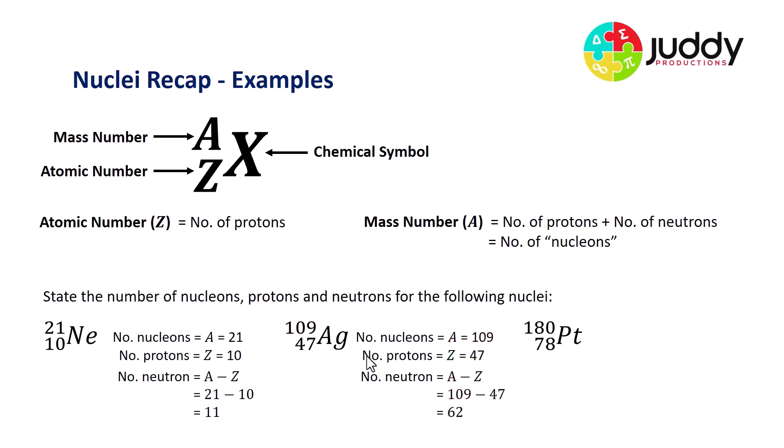And finally, our example of platinum 180. So the number of nucleons again is the mass number A, and that represents in this case 180, as shown in red. The number of protons is the atomic number Z, and that represents 78, in this case shown in green. And the number of neutrons is the difference between the mass number A and the atomic number Z. So in this case, it's 180 take 78. This equates to the number of neutrons being 102.